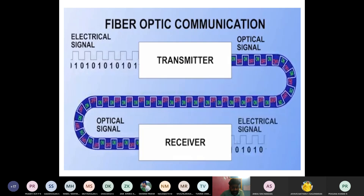Initially, the information is in the form of an electrical signal — electrical pulses. When these electrical pulses fall on the transmitter, the transmitter internally has three circuits. Those three circuits convert the electrical signal into an optical signal, that is, a light signal. The converted optical signal then falls on the fiber.